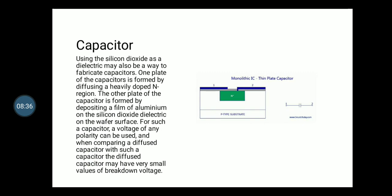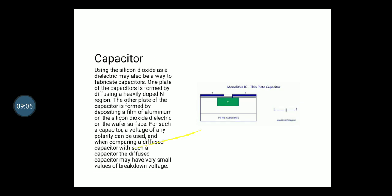Using the silicon dioxide as a dielectric, it may be a way to fabricate capacitors. One plate of the capacitor is formed by diffusing the highly doped n-type regions, and the other plate is formed by depositing a film of aluminum on the silicon dioxide dielectric. For such a capacitor, a voltage of any polarity can be used. When comparing a diffused capacitor with such a capacitor, the diffused capacitor may have very small values of breakdown voltage.